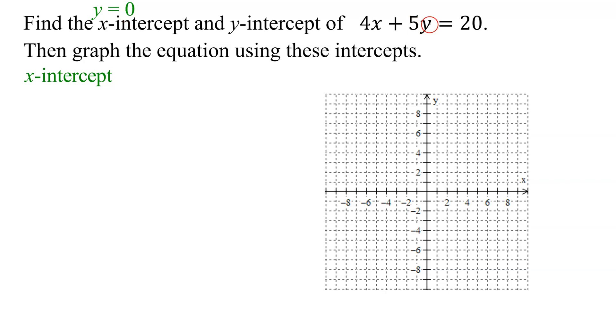So we're going to set y equal to 0 in our equation. So we're going to get 4x plus 5 times y, which is 0, equals 20. So 5 times 0 is 0, so we're going to get 4x equals 20. Get x by itself by dividing both sides by 4. And we get x equals 5. So the x-intercept is the ordered pair x is 5, and what is y? Remember, y equals 0. So there is the x-intercept for this graph.